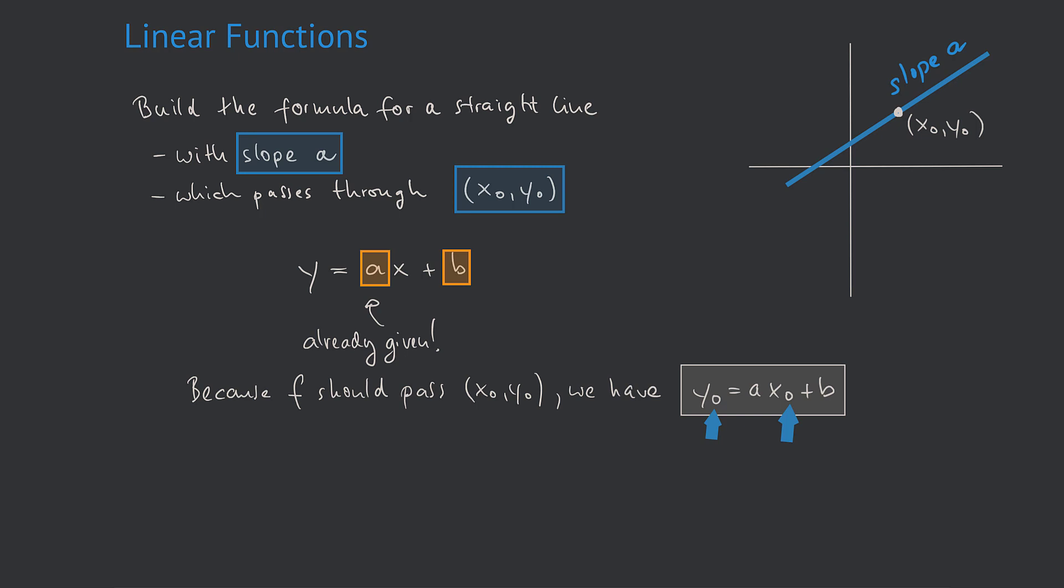Now on this equation, every variable is known except for b. We know the value for a because this is the given slope, and we know the values for x0 and y0 because that is the given point. So the only variable we don't know is b. But in this case, we can simply solve this equation for b and find the value for b that way.